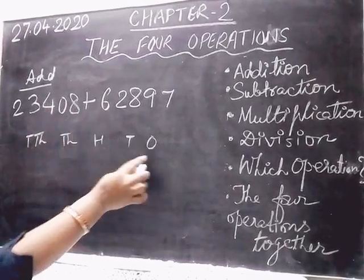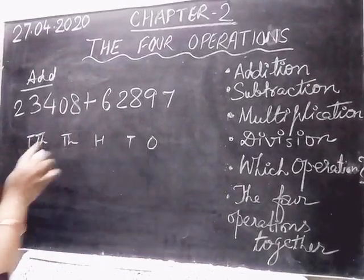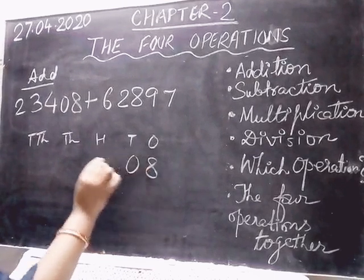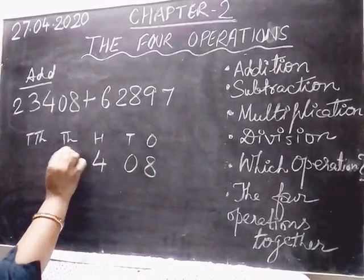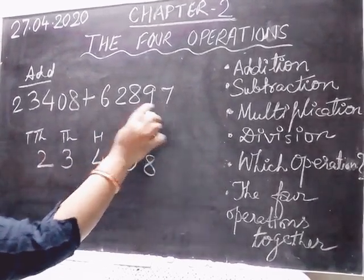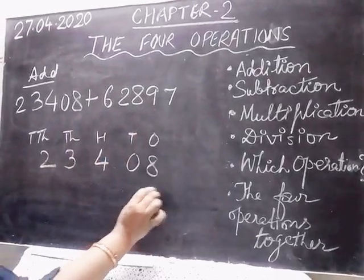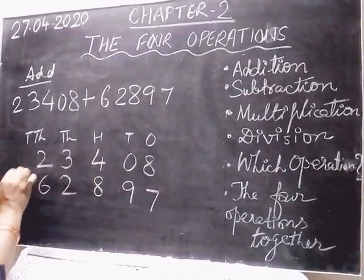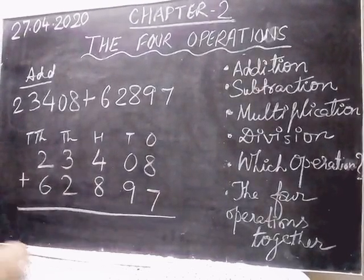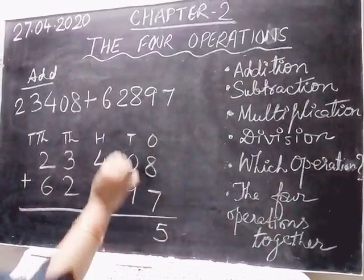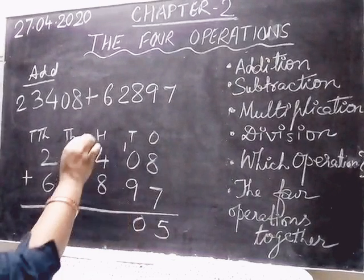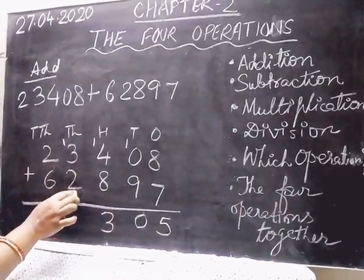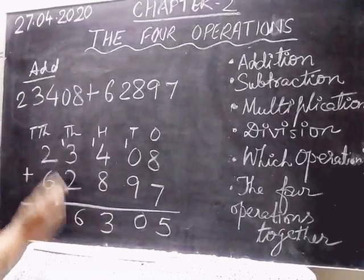Always arrange the number from the ones place — never begin from the left side. For 23408: ones is 8, tens is 0, hundreds is 4, thousands is 3, ten-thousands is 2. For 62897: ones is 7, tens is 9, hundreds is 8, thousands is 2, ten-thousands is 6. Now add: 8 plus 7 is 15, write 5 carry 1; 0 plus 9 plus 1 is 10, write 0 carry 1; 4 plus 8 plus 1 is 13, write 3 carry 1; 3 plus 2 plus 1 is 6; 2 plus 6 is 8. The answer is 86305.